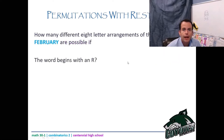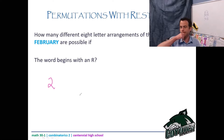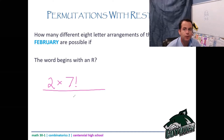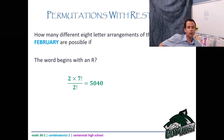How many different eight-letter arrangements of the word February are possible if the word begins with an R? I have two R's to choose from, plus seven letters left that I don't restrict. So I have 2 choices for the first letter times 7 factorial for the rest. But I also have repeating letters — two R's — so I divide by 2 factorial. That gives 2 times 7 factorial divided by 2 factorial, which is 5,040.